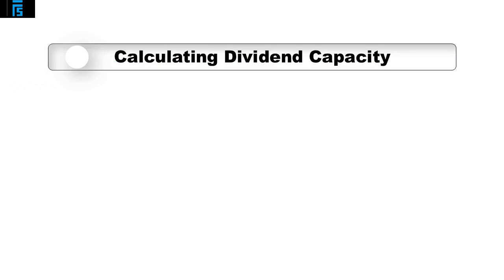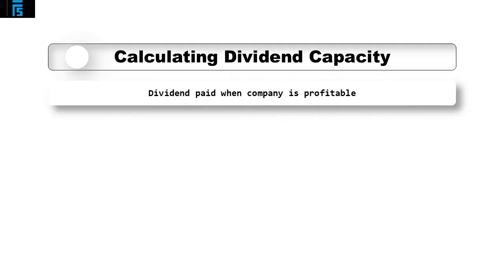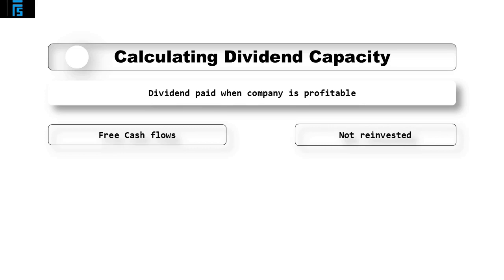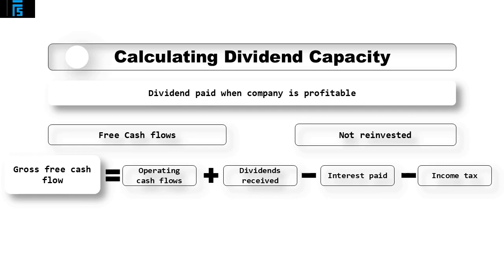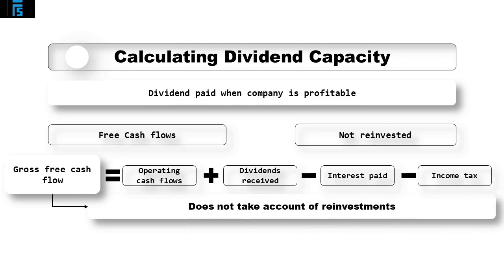Let us now consider how a multinational company actually calculates its dividend capacity. Dividends are paid out when a company is profitable, that is when it generates free cash flows which are not reinvested. In the case of multinational companies, gross free cash flow is computed as the company's operating cash flow plus dividends received, less interest paid on debt financing and less income tax. Please note that gross free cash flow as defined does not take into account any reinvestments such as capital expenditure or funds required for the acquisition of other entities, nor does it consider potential increases of capital.